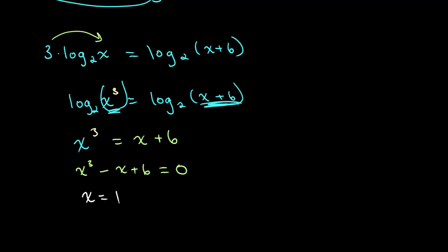We can verify this: 2 cubed is equal to 8, and 2 plus 6 is also equal to 8, so x equals 2 checks out.